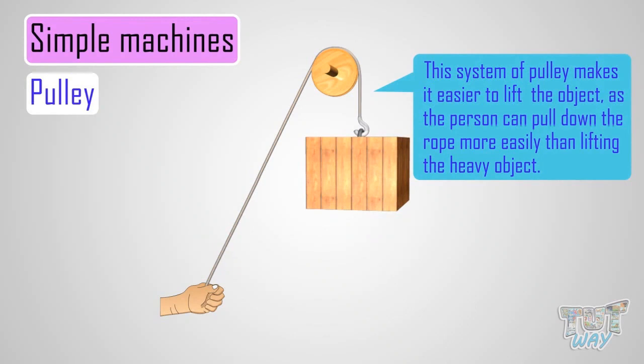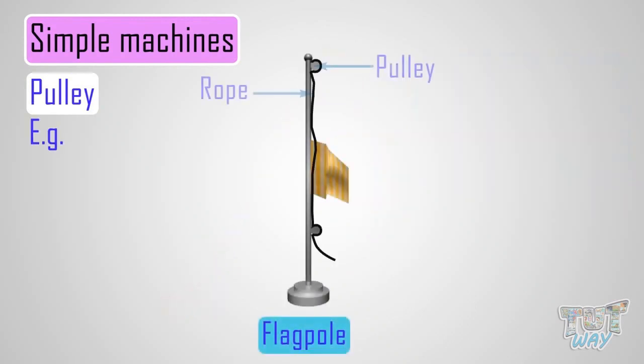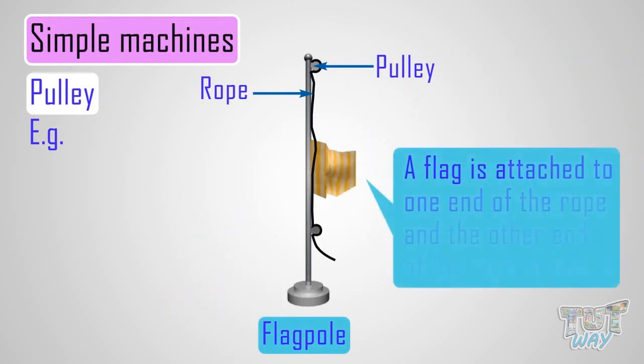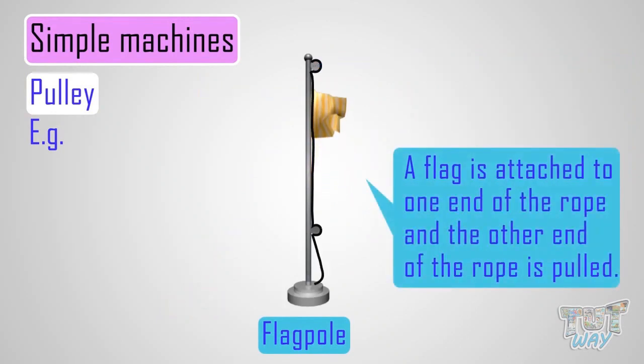A common example is a flagpole, where the flag is attached to one end of the rope, and the other end of the rope is pulled till the flag reaches the top.